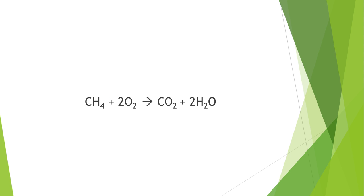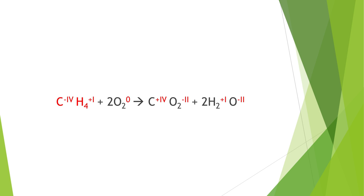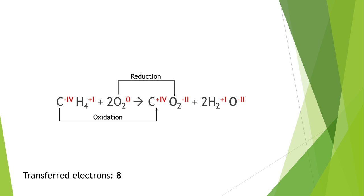In the last reaction equation, methane reacts with two oxygen molecules to form carbon dioxide and two water. The oxidation number of carbon is -4 and hydrogen is +1 in methane, and oxygen is 0 in O₂. In the products, carbon is +4 and oxygen is -2 in CO₂, and hydrogen is +1 and oxygen is -2 in water. The total number of transferred electrons is eight.